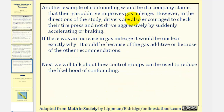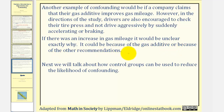Another example of confounding would be if a company claims that their gas additive improves gas mileage. However, in the directions of the study, drivers are also encouraged to check their tire pressure and not drive aggressively by suddenly accelerating or braking. If there was an increase in gas mileage, it would be unclear exactly why — it could be because of the gas additive or because of the other recommendations.